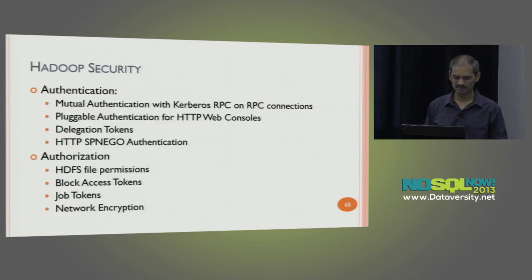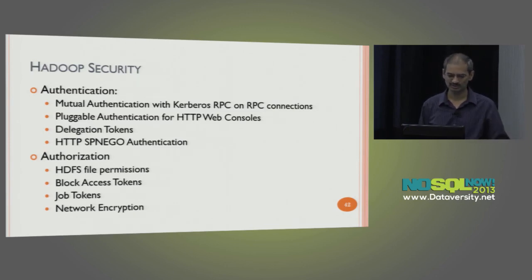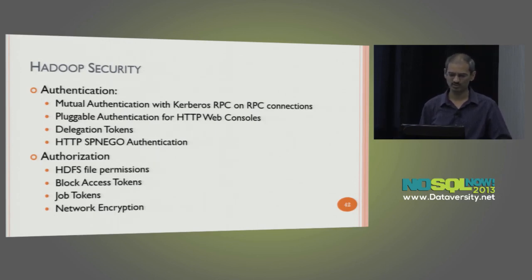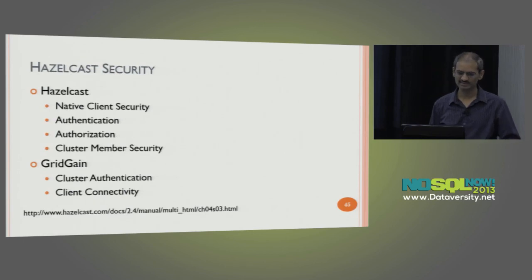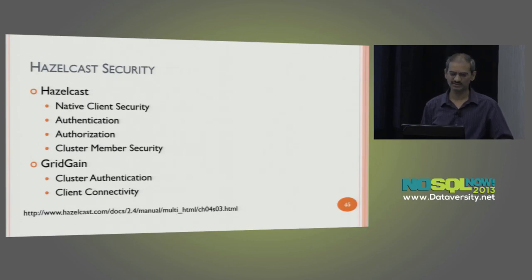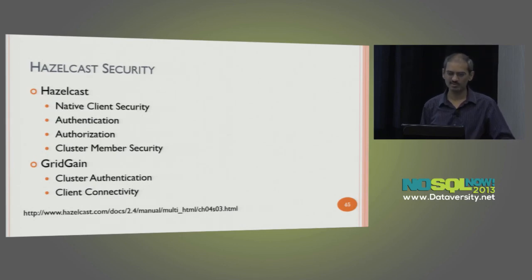For columnar databases, use cases include content management, analytics, and logging. Cassandra has a better security API compared to other NoSQL databases, providing their own security API, and they are also working with Gazzang on encryption and key management. For big data, Hadoop has a good authentication and authorization model with file permissions, job tokens to secure MapReduce jobs, and delegation tokens for subsequent authentication. For in-memory data grids, Hazelcast provides native client security including authentication, authorization, and cluster member security. GridGain also has authentication and connectivity security.